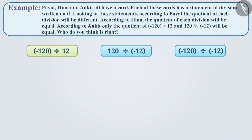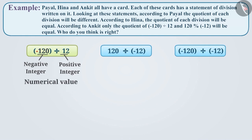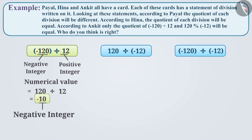Let's solve the first statement: minus 120 divided by 12. Here, the negative integer is being divided by the positive integer. To solve this, first we will divide the numerical value of minus 120, that is 120, by the numerical value of plus 12, that is 12. Its quotient will be 10. When a negative integer is divided by a positive integer, the quotient is negative. Therefore, the quotient of minus 120 divided by 12 will be minus 10.